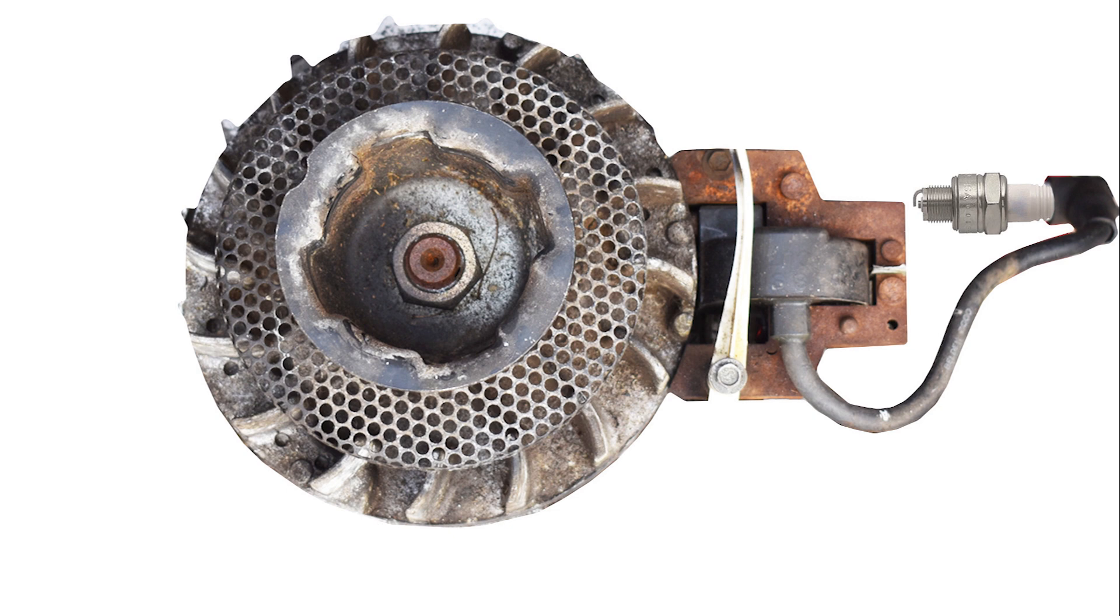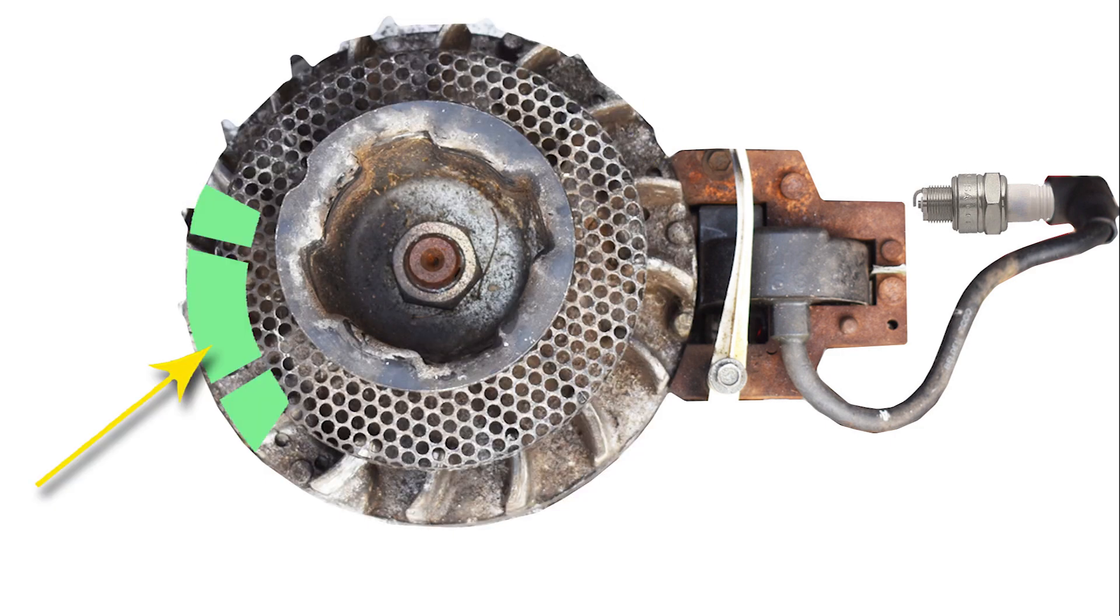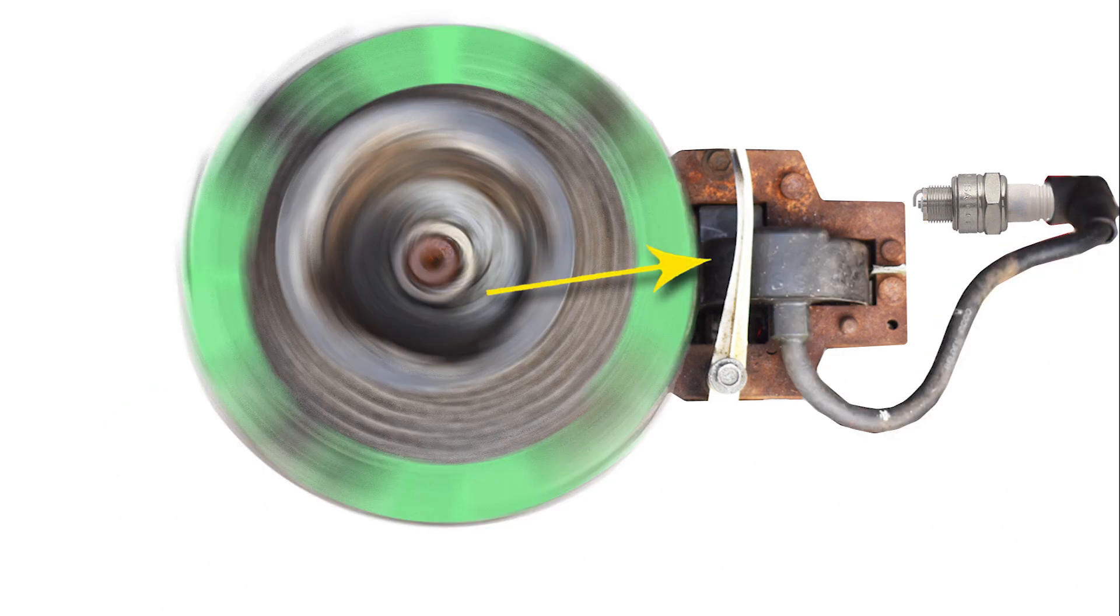So of course the ignition coil sits on the outside of the engine next to the flywheel. As the flywheel turns, the fixed magnet on the flywheel interacts with the ignition coil in such a way that the ignition coil produces electricity that it sends through the HT lead to the spark plug to create a spark.